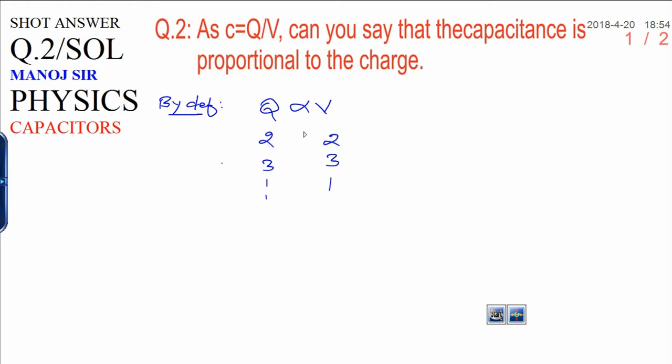It means when you increase Q, V will also increase. Then when you remove its proportionality symbol, it will be C times V. And here capacitance is what? That is Q upon V. It means capacitance is a constant ratio. This is a constant ratio.